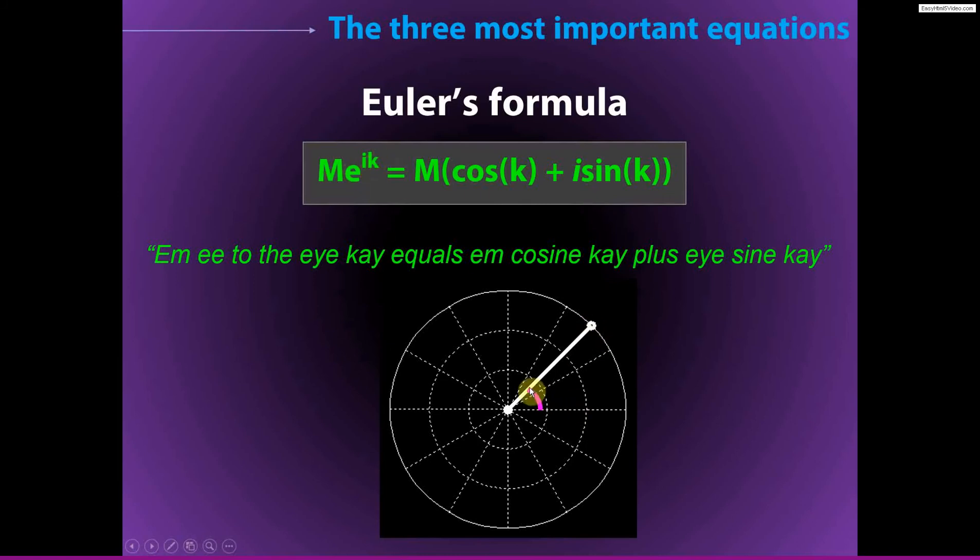And we have k, which is the angle with respect to this line here. We will discuss in a future video that you can conceptualize this as a complex plane, and this can also be called the positive real axis. So this angle in radians would be k, and this distance would be m.